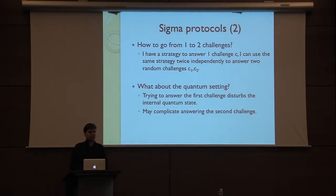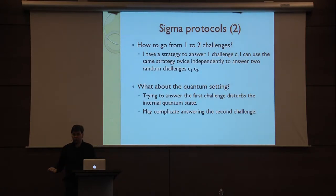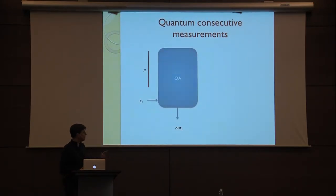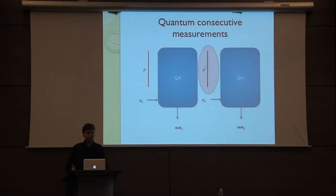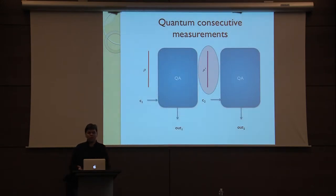What about the quantum setting? We get a first challenge and we answer, and then we get a second challenge or get them at the same time. But after answering this first challenge, what happens is that the internal quantum state has changed. So the question is: did answering the first query make it impossible to answer the second one? It may complicate answering the second challenge. So just to look at pictures of quantum consecutive measurements — if you have an internal state rho, you have a quantum algorithm, a first challenge c1 and an output 1. If you are given a second challenge, then your new internal state is rho prime, and in many cases this rho prime can be very different from rho. These things are kind of hard to control in general.